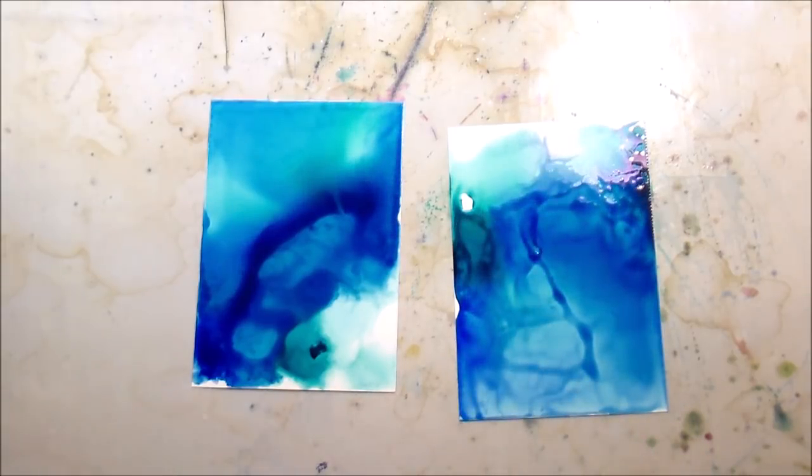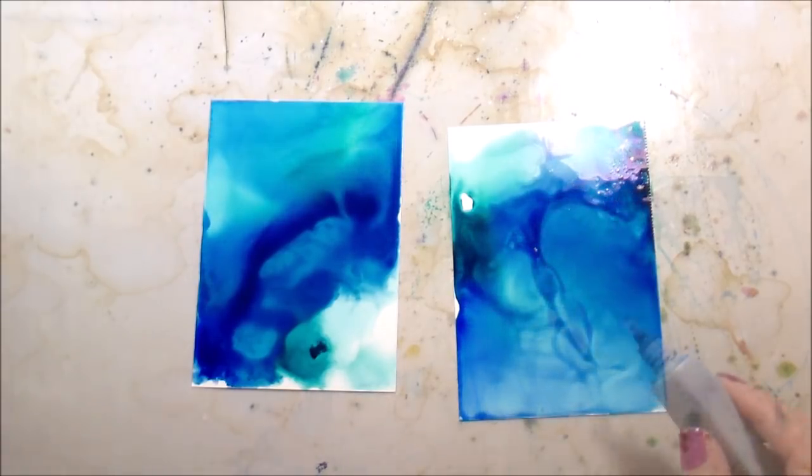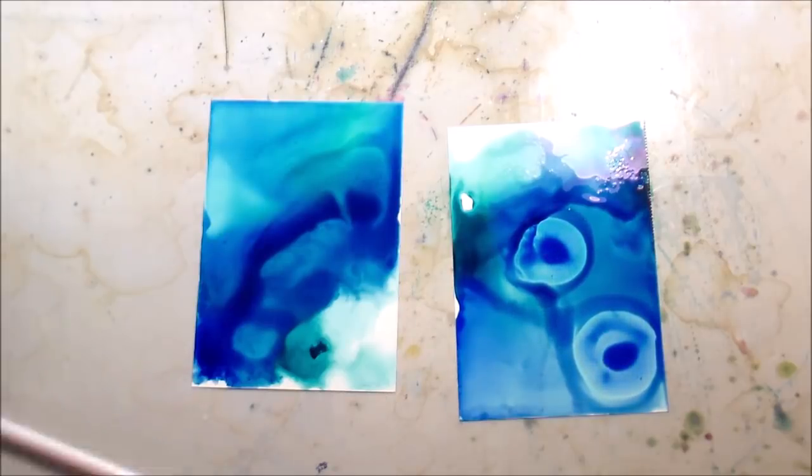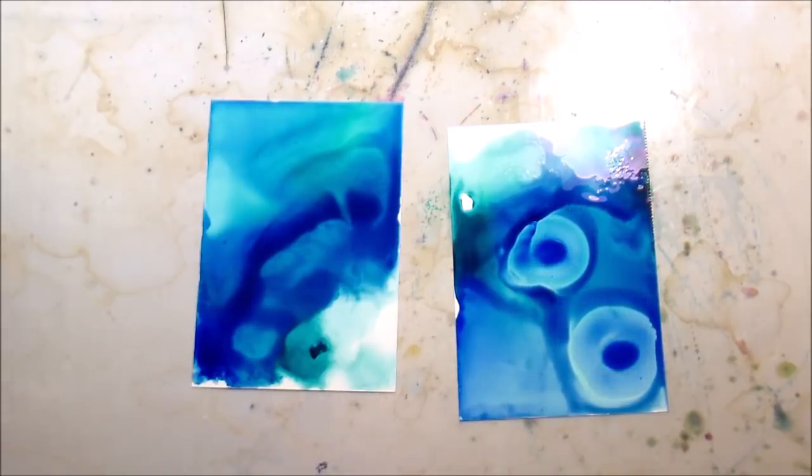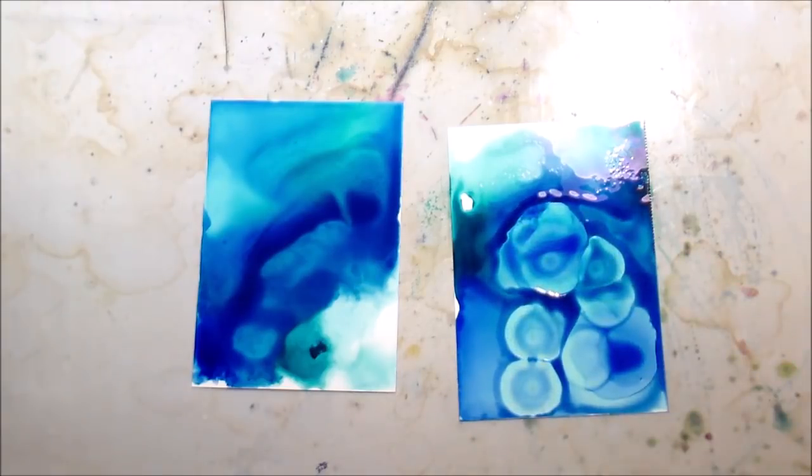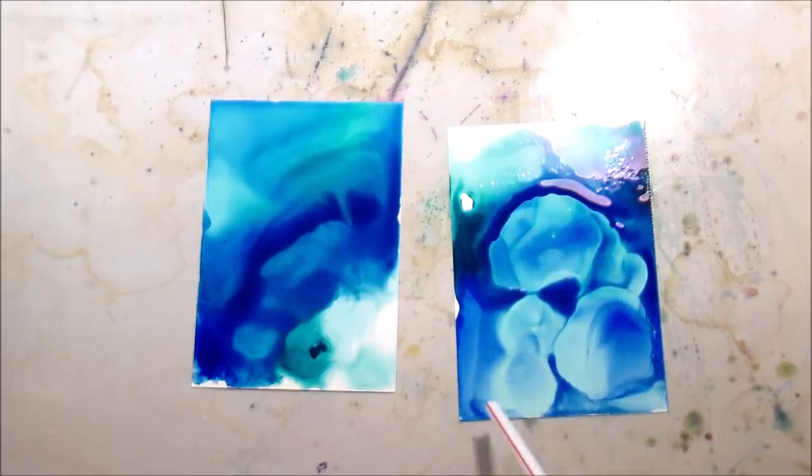I did notice with the Copic reinkers that maybe they dried a hair faster than the alcohol inks. And then also the texture is very different when they are dry. So the one on the left, and I think it's because I did pick blues and greens, it is a little bit more granulated.